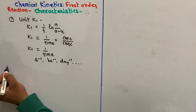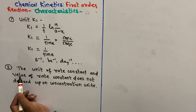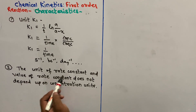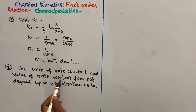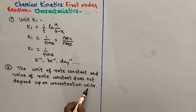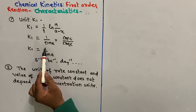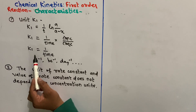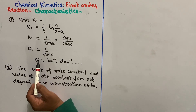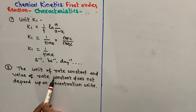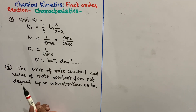Characteristic number 2: the unit of rate constant and the value of rate constant do not depend upon concentration units. As seen in characteristic 1, k1 equals 1 by time — that is, the unit is per second. It does not have any concentration units. Therefore, the unit and value of rate constant do not depend upon concentration.